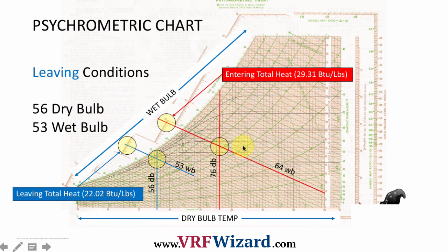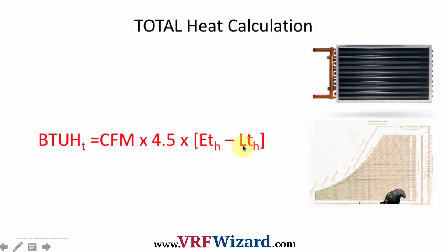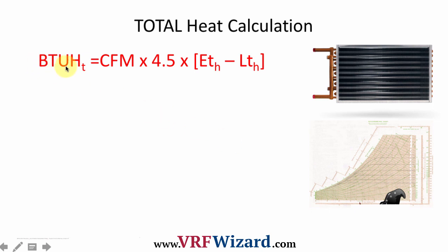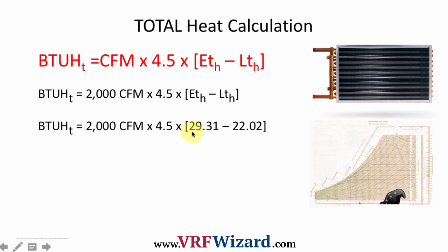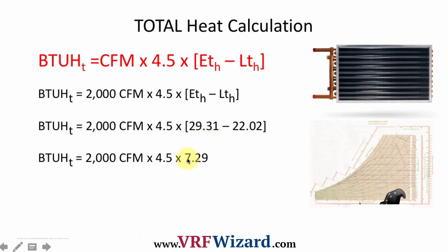Looking at the calculation again: BTUs per hour total equals CFM times the constant times the delta enthalpy. We had 2000 CFM, entering enthalpy of 29.31, leaving enthalpy of 22.02. The difference is the delta enthalpy. Basically it's just math at this point — and there you have it: 65,610 BTUs per hour. Very simple equation.